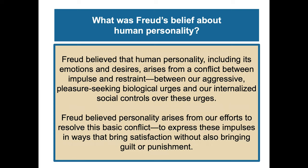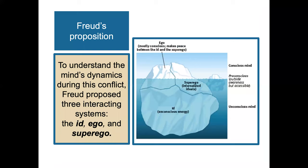Freud believed that human personality, including emotions and desires, arises from conflict between our basic impulses and our ability to restrain ourselves — between our aggressive pleasure-seeking biological urges and our internalized social controls over these urges. Think of it like a devil on one shoulder and an angel on the other, trying to balance different urges. Freud believed personality arises from our efforts to resolve this basic conflict — to express these impulses in ways that bring satisfaction without also bringing guilt or punishment.